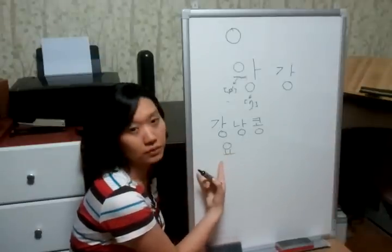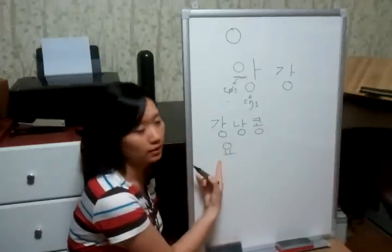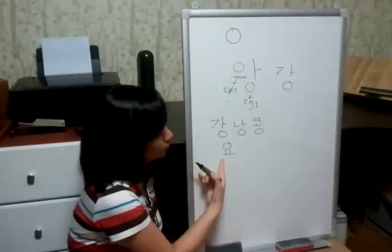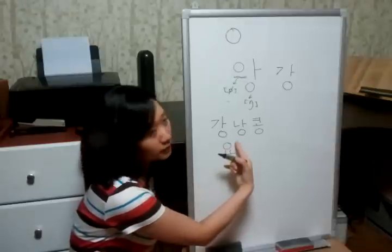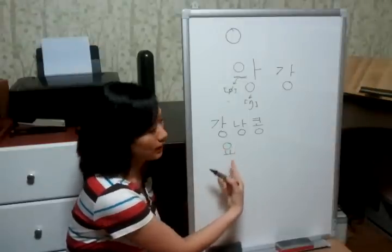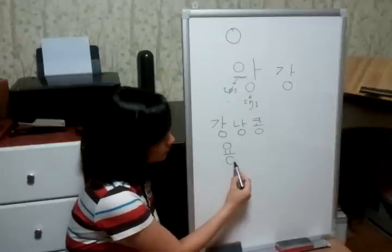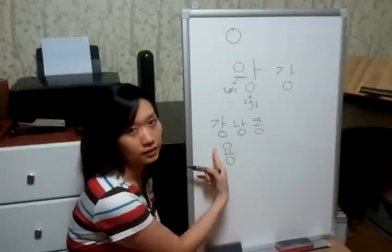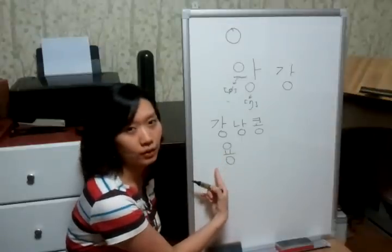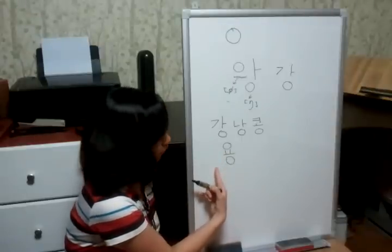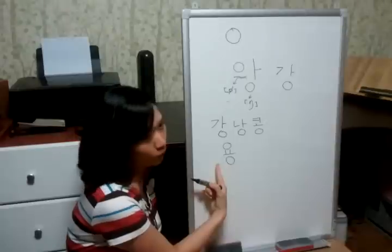And could you read it? What is it? It's 요. It has no phonetic value, and vowel 요 sound, and ending consonant 음. So what is it? 용. 용.